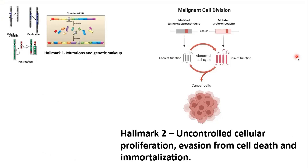Secondly, cancer is a disease having uncontrolled cellular proliferation where the genes of cell cycle acceleration — the proto-oncogenes — are not stopping because of gain-of-function mutations. On the other hand, the genes that stop the cell cycle, called tumor suppressors, are not working because of loss-of-function mutations. One more thing these mutations are doing is disabling the pathways of cell death, making the cancer cells immune to cell death.